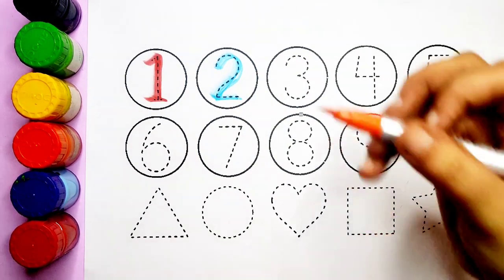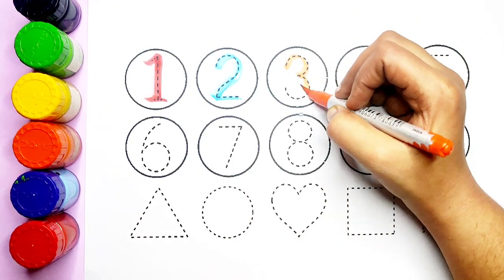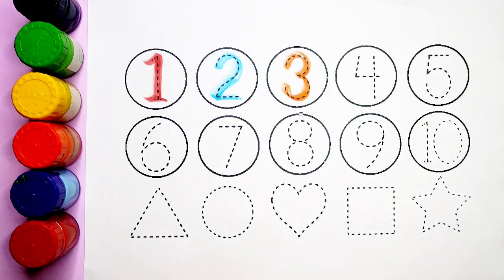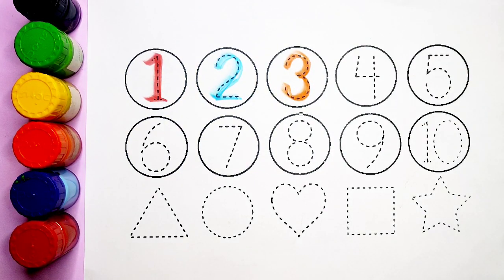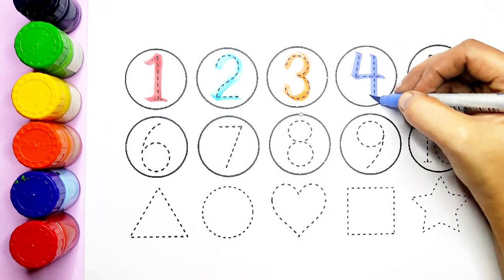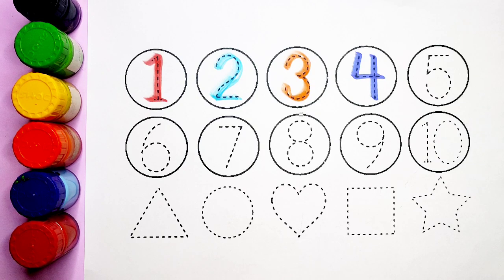After two comes three. What comes children? Three. Orange color, number three. After three comes four. What is this children? Four. Black blue color, four.